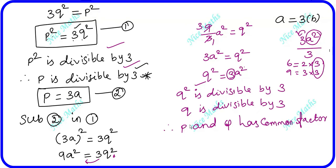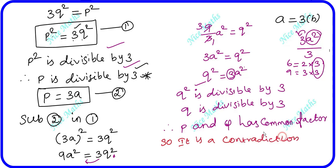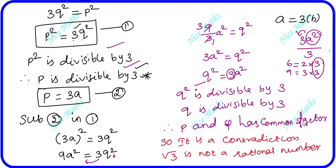This is a contradiction, because we assumed p and q have no common factor other than 1. But we have shown that 3 is a common factor of both p and q. So our assumption that root 3 is rational leads to a contradiction. Therefore, root 3 is not a rational number.